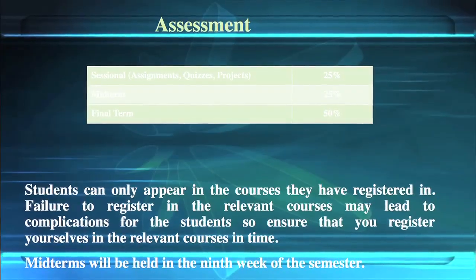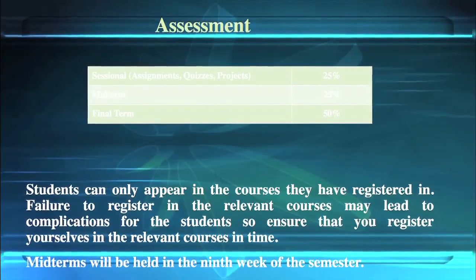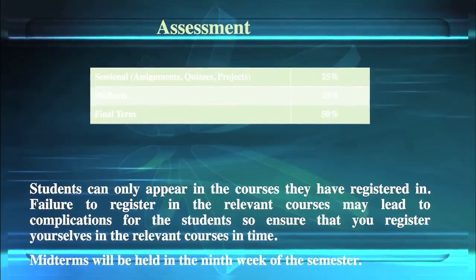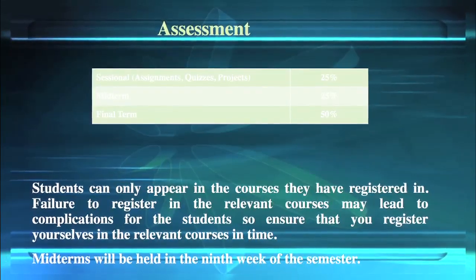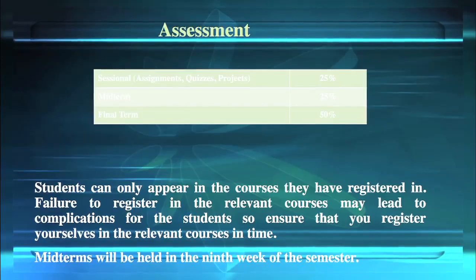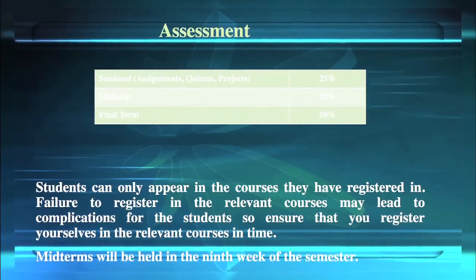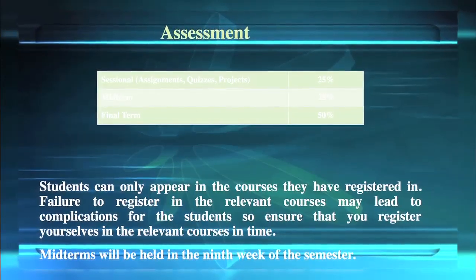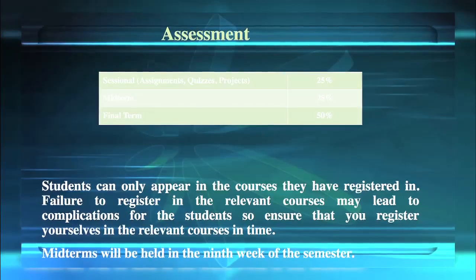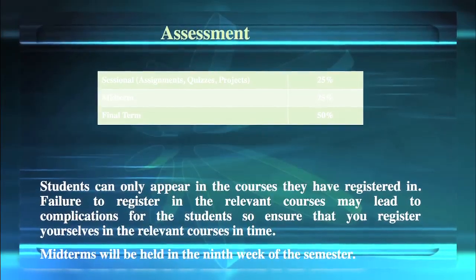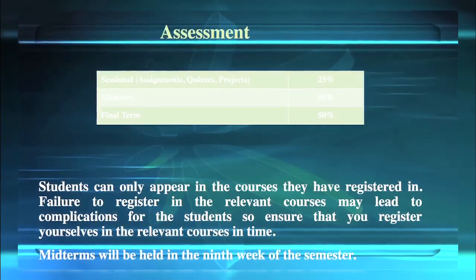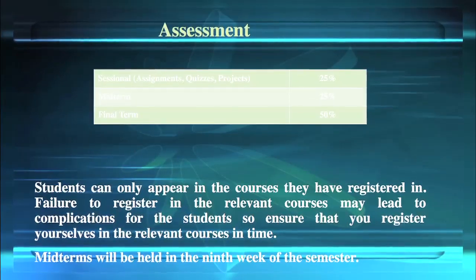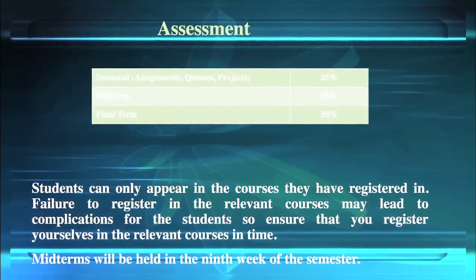To pass a course, there is continuous assessment which includes Sessional, Midterm, and Final Term. Sessional weightage is 25%, Midterm weightage is 25%, whereas Final Term is 50%. Students must obtain a minimum GPA of 2.0 to pass a course.